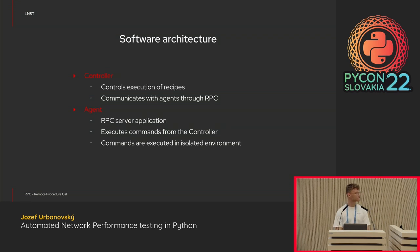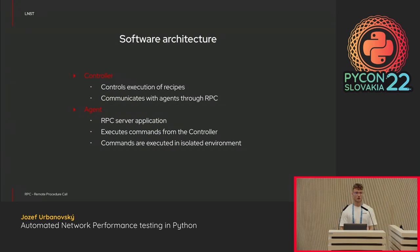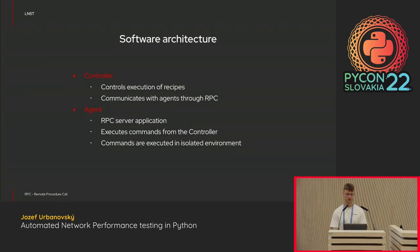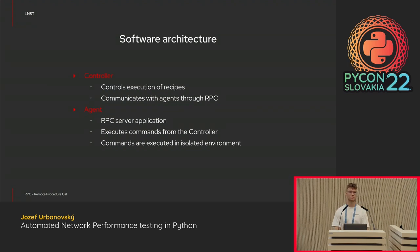How about our software architecture? It consists of two main processes: the controller and the agent. The controller is basically an API for the tester, abstracting them from all the things we've talked about — it finds a suitable setup, distributes the code, and controls execution. We distribute code and control execution through a custom RPC protocol that communicates from the controller to the agent and also handles communication between agents. The agent is an RPC server application; in minimal terms it can be regarded as a test executor. What the controller tells the agent to do, the agent executes, and each command executed on the agent is done in an isolated environment with results reported back.